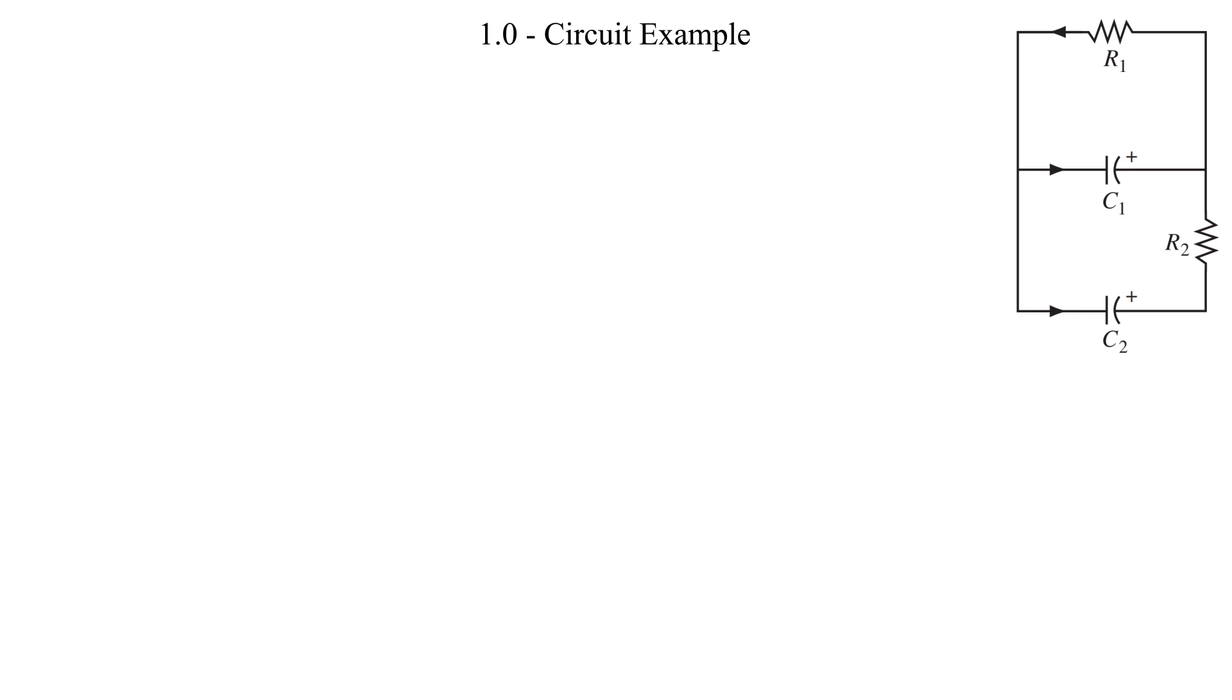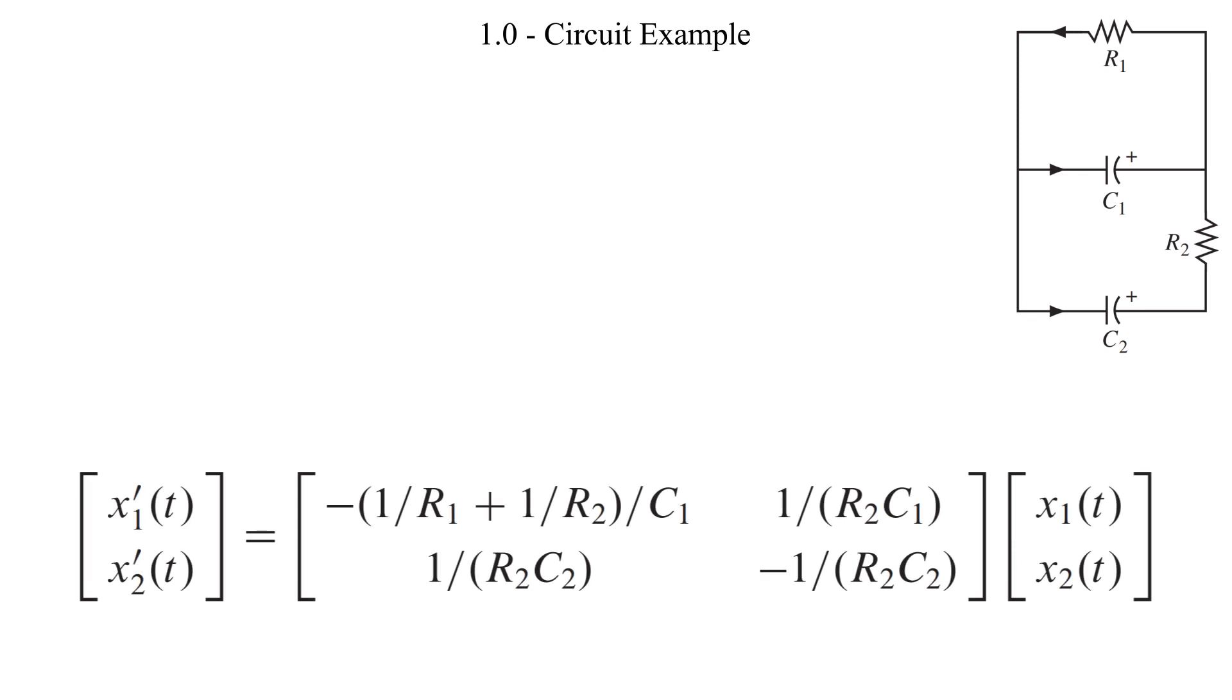The circuit system shown on the right is defined by the matrix differential equation shown here. x1(t) and x2(t) are the voltages across two capacitors at time t. Given the initial conditions of the system, we are tasked to find formulas for x1(t) and x2(t) that describe how the voltages change over time. The A matrix is given to us, meaning that the matrix differential equation is also given to us.